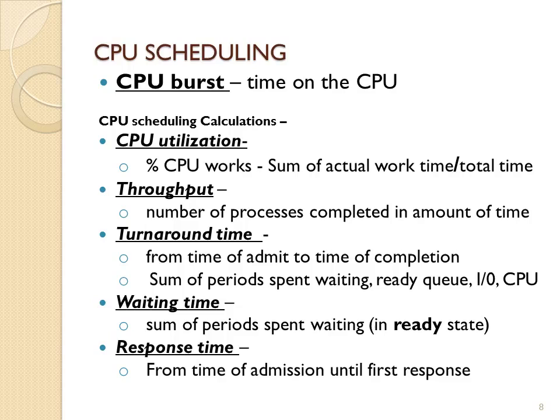Turnaround time is from the time a process gets admitted into the system, goes into the ready state, executes, goes to IO, back to ready, back to executing, interrupted, and so on — until it eventually exits. It is the total time the process is active in the system, from admit to exit. Waiting time is the amount of time a process spends waiting in the ready queue. Response time is from admit to the first time the process gets on the CPU — it is the first measurement of waiting time.